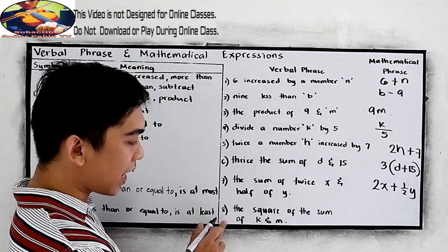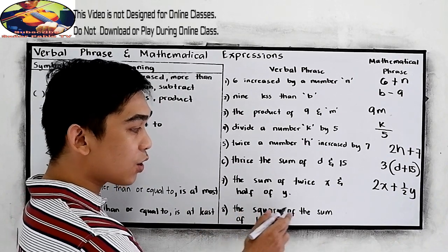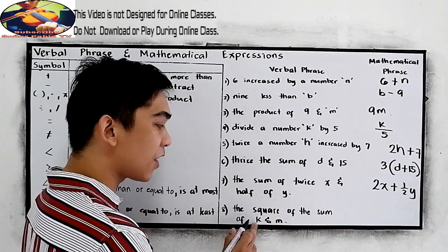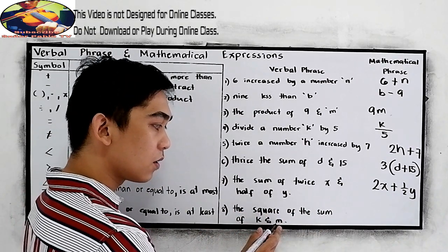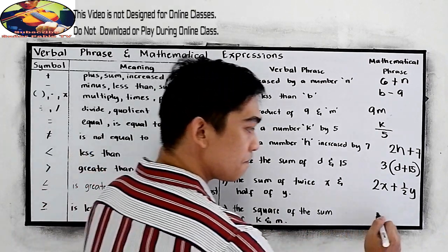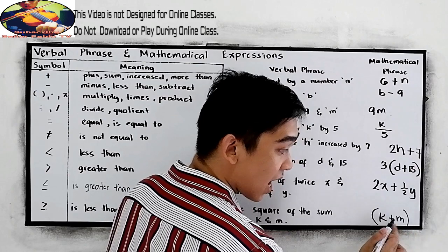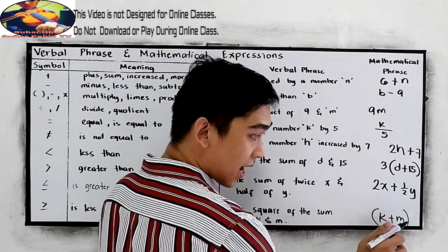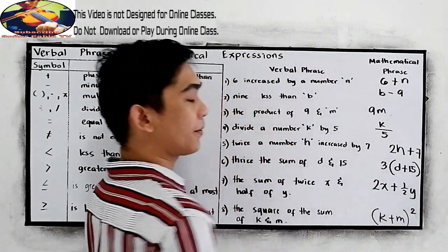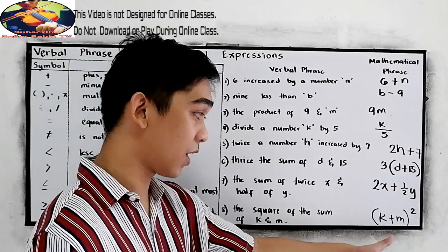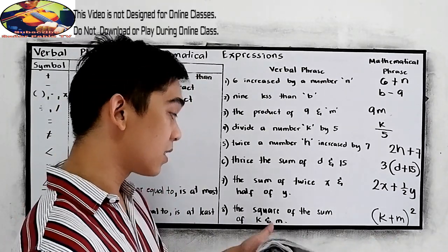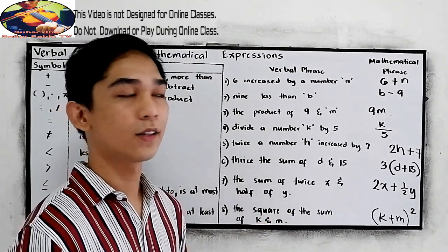And number eight. The square of the sum of k and m. So, the sum of k and m. K and m, sum, so we need to use the plus sign. Then square. The sum of k and m, then square it. So, that's the use of our mathematical expression and verbal phrase.